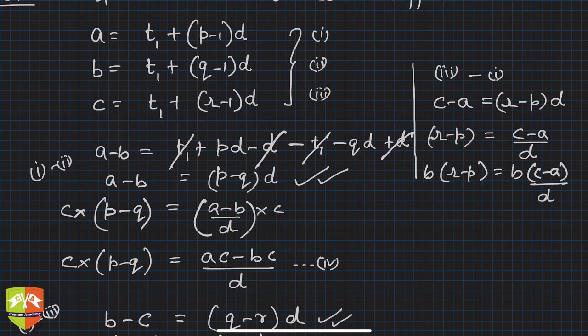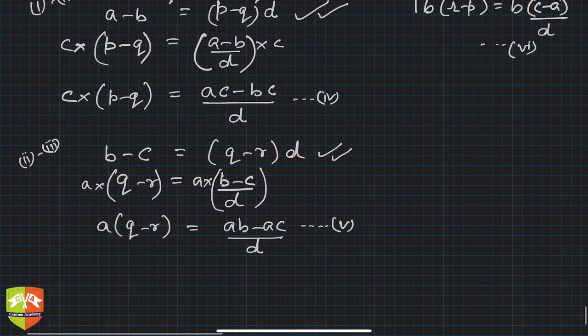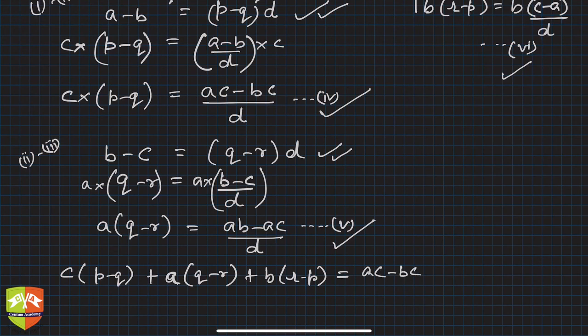So if you add, you will get c(p-q) + a(q-r) + b(r-p). All LHS added together. All RHS, let's add. We had (ac - bc)/d plus (ab - ac)/d plus, so this was how much? This was, if you see, this is b...